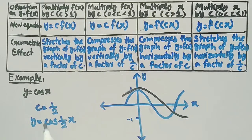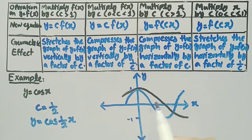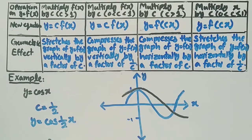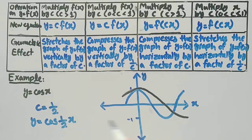The graph in blue is the graph of cos(x) and the graph in black is the graph of cos((1/2)x). Comparing the two functions, we can see that the graph of cos((1/2)x) is stretched horizontally by a factor of 1/2 when compared to the graph of cos(x).